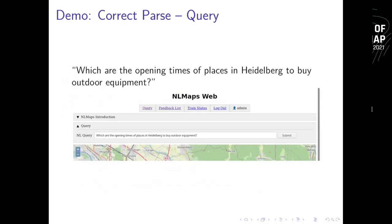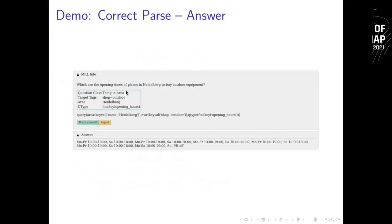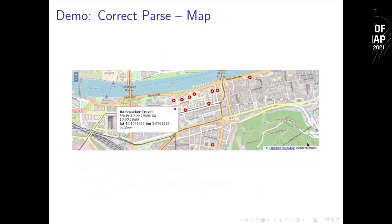Now for a quick demo of the web interface — we can try it live later on. For example, we can ask 'which are the opening times of places in Heidelberg to buy outdoor equipment?' and we receive an MRL parse. Here is the raw MRL parse, and here is a more human-readable version. Then this is the answer selected from OpenStreetMap using a query to Overpass. We also receive a map with the highlighted places, and we can click on them to receive information.